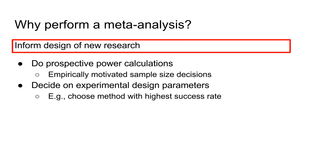A second use of meta-analysis is to inform the design of newly planned research. For instance, meta-analysis allows us to do prospective power calculations. Using the effect size and sample size of previous similar studies, we can calculate their likelihood to detect an effect when it is actually there. Using this information, we can decide how many participants we need to test to detect an effect, for example with a probability of 80%. We can also use meta-analyses to make experimental design choices, for instance choosing the method that has led to the highest effect sizes previously.